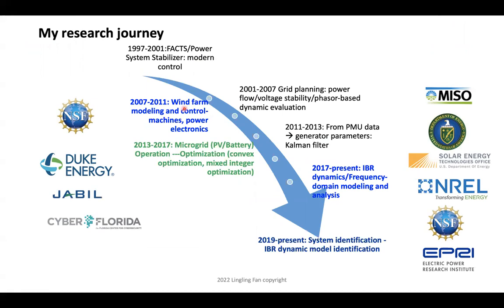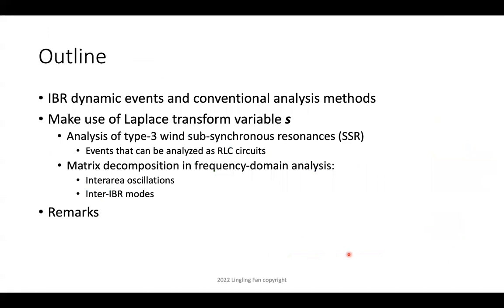At North Dakota State I started working on wind turbine and wind farm modeling and control, picking up AC machine and power electronics knowledge. Moving on, I picked up convex optimization and applied mathematics. Then a couple of years ago IBR became a major focus — solar PV and IBR dynamics — and I started doing a lot of frequency domain analysis. I received a CITO grant in 2019 to work on solar PV modeling, and most recently NSF awarded me a grant on system identification, combining dynamics and optimization for data-driven IBR modeling.